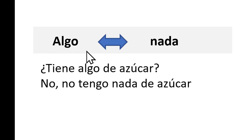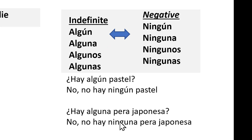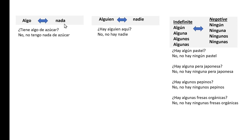And those are the three sets. Algo versus nada — use these whenever you're asking about something you can't really count, like salt or sugar. Algún, ningún, and so on — use those whenever you're asking about things you can count, like apples or shoes. And alguien and nadie whenever you're asking about a person. Always think of them as sets: use the word on the left in the question, and the one on the right — nada, nadie — when answering negatively. I'll have a second part with additional sets of words, so be sure to look at that as well. I hope that helped — I'll see you in the next recording. Adiós.